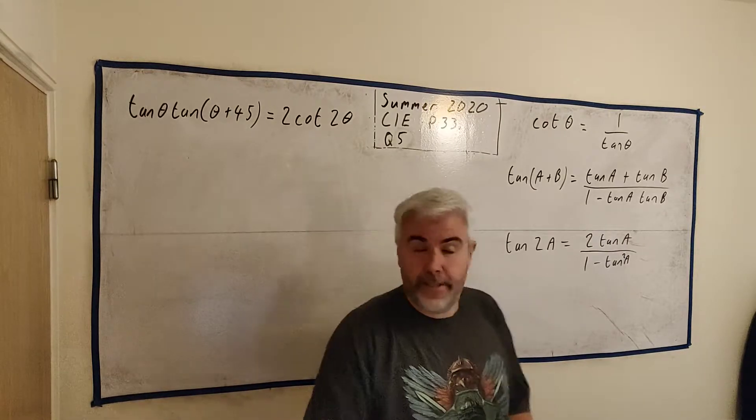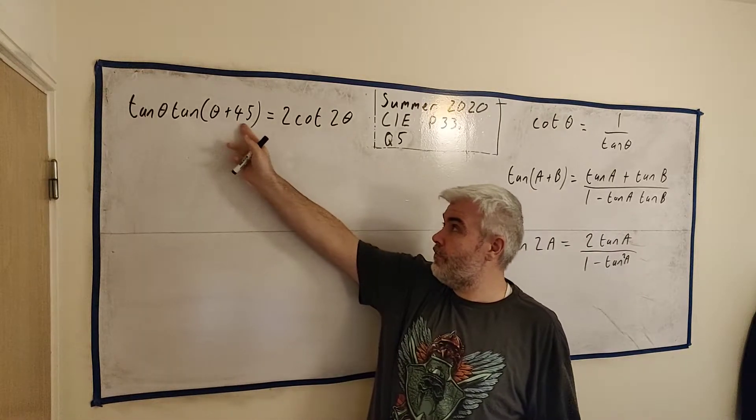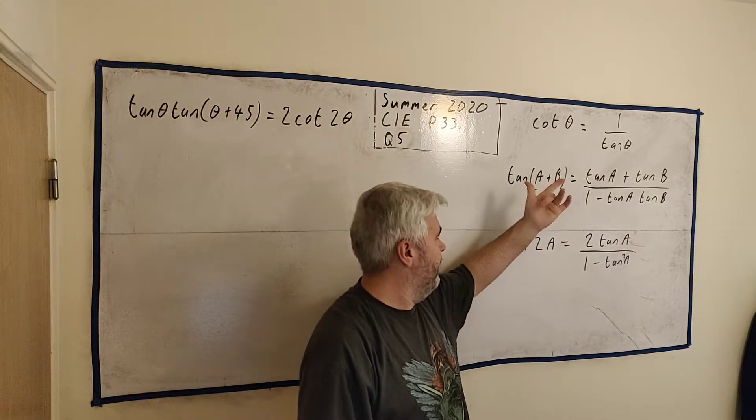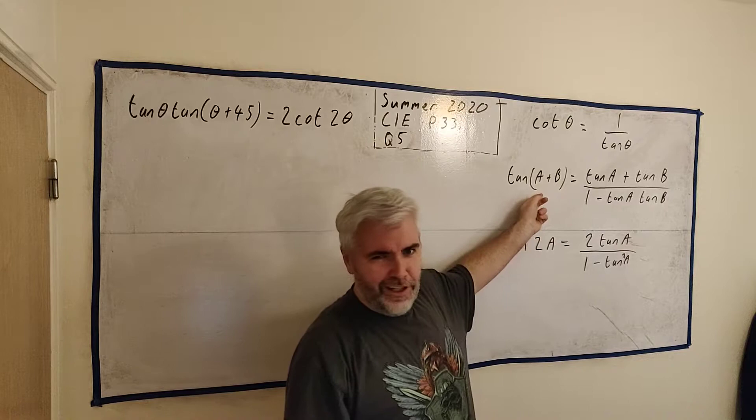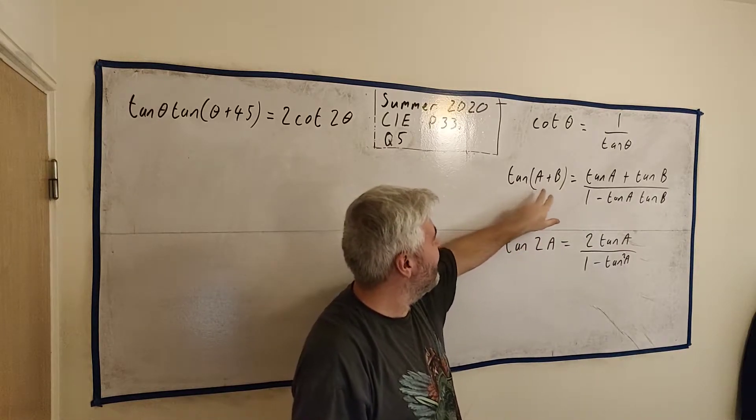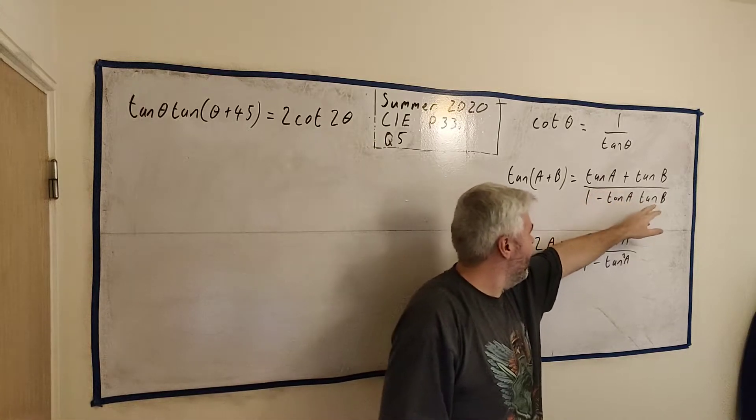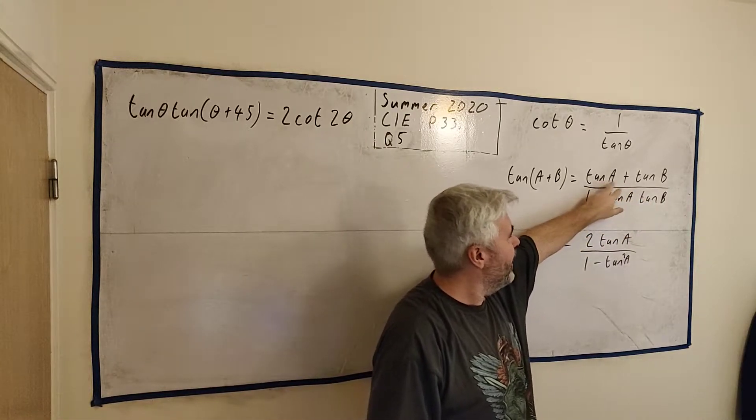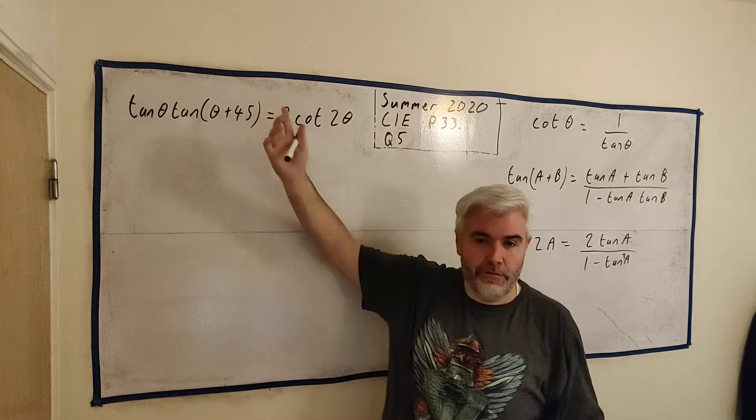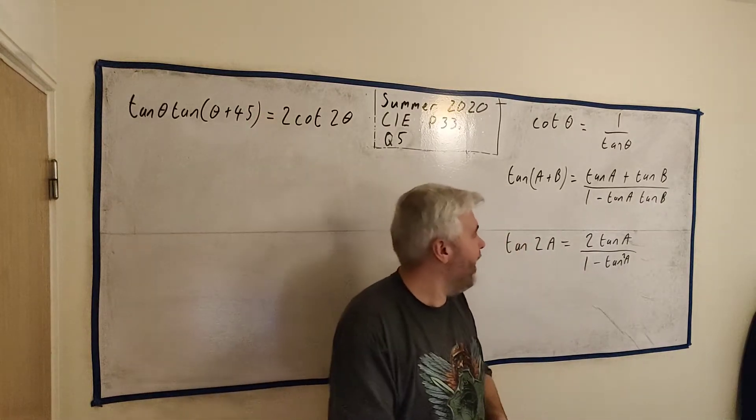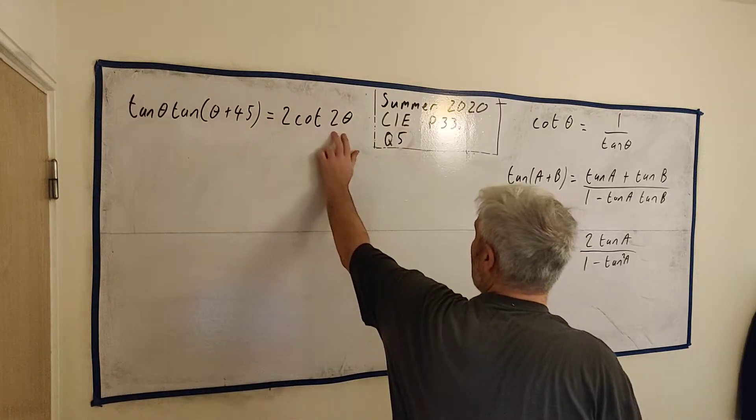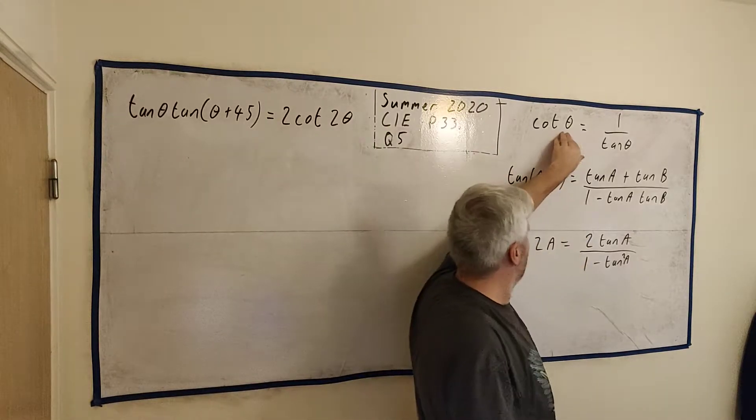And let's see another one this θ + 45 we can get rid of that by using the tangent of a plus b formula we can separate it out so we get tangent of θs and tangent of 45 will come out and that's just 1 tan of 45 is just 1.